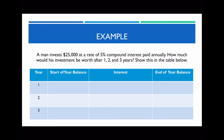The question reads: a man invests $25,000 at a rate of 5% compound interest paid annually. How much would his investment be worth after 1, 2, and 3 years? Show this in the table below. Notice this question doesn't mention compounding frequency, so we assume compound interest is earned once a year. We start by recording the starting balance of $25,000, and since he's earning 5% per year, we calculate 5% of $25,000 which is $1,250.